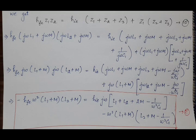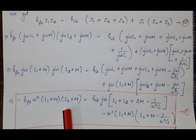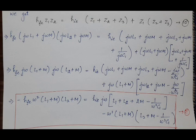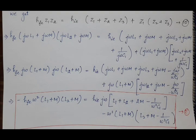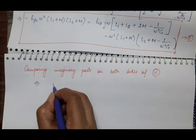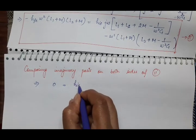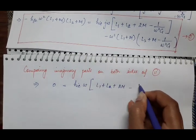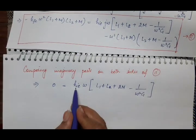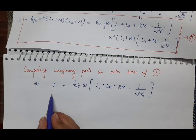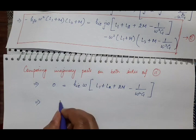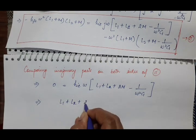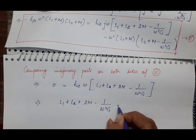Comparing imaginary parts on both sides: the left-hand side has no imaginary part, so it is zero. On the right-hand side the coefficient of j is hie·ω·(L1 + L2 + 2M − 1/(ω²C1)). Since the left-hand side imaginary part is zero, and hie·ω ≠ 0, we set the bracket equal to zero: L1 + L2 + 2M − 1/(ω²C1) = 0.